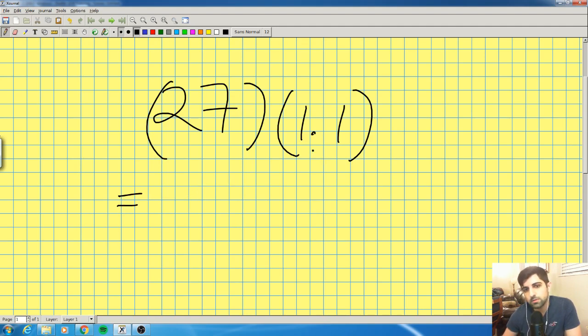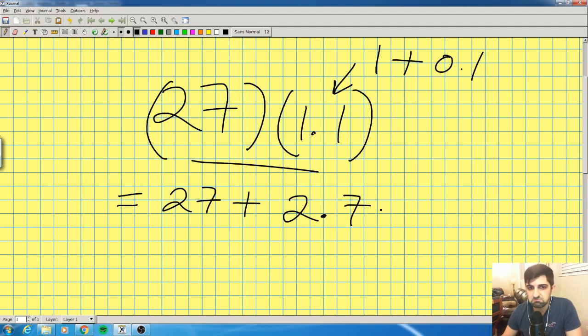One thing you have to note is that 1.1 can be split into 1 plus 0.1, right? So all I have to do is multiply 27 to 1 and then multiply 27 to 0.1 and then add them together and that's basically this result. 27 times 1 is 27 plus 2.7, right? That's 27 times 0.1. Multiplying by 0.1 just means move the decimal over once to the left and then you got 29.7. Bingo.